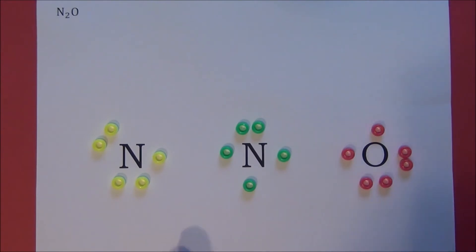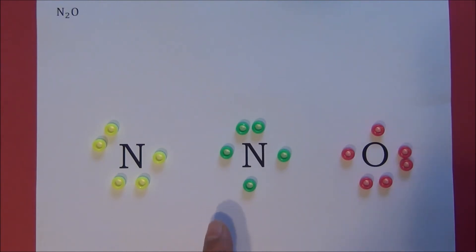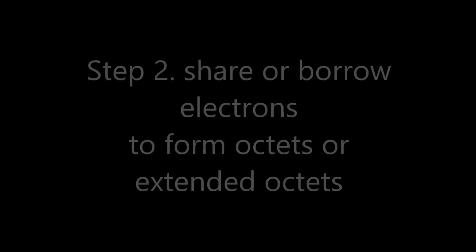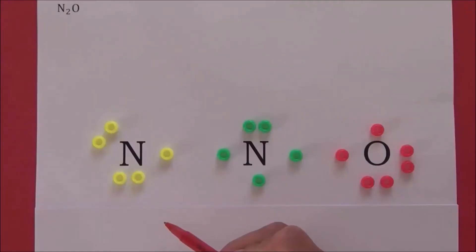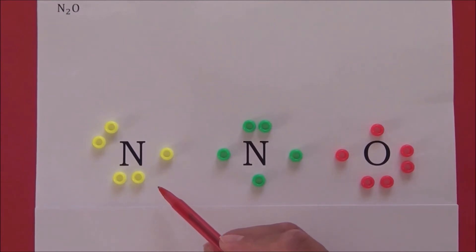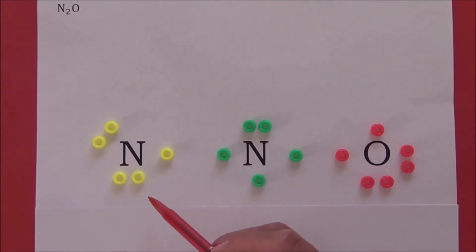I want to remind you that after this point, you cannot add additional electrons or take electrons away. But you are free to change the locations of the electrons. The second step to write Lewis structures is to change the locations of the valence electrons to make sure every atom will have an octet, which means every atom will have eight octet electrons.